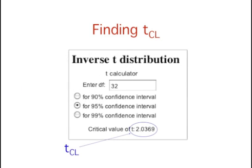From either the inverse T distribution calculator or a T table, you can find that the T for a 95% confidence interval for 32 degrees of freedom is 2.0369.